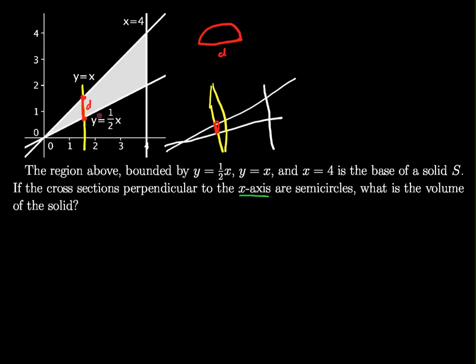where this diameter measures the distance vertically between these two functions. And I can find that quite easily by taking the top function minus the bottom function. So we know the diameter is equal to the top function, x, minus the bottom function, one-half x, which will then equal one-half x.